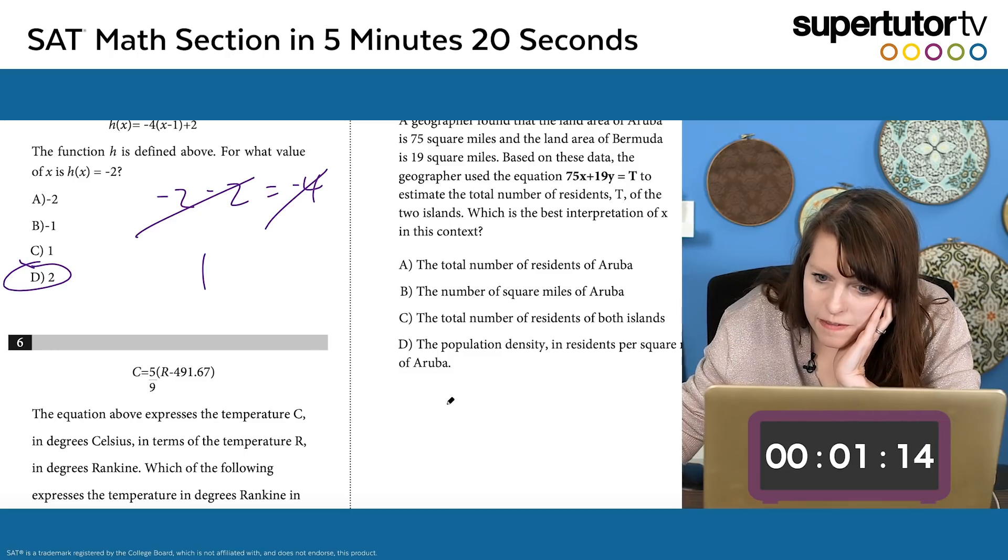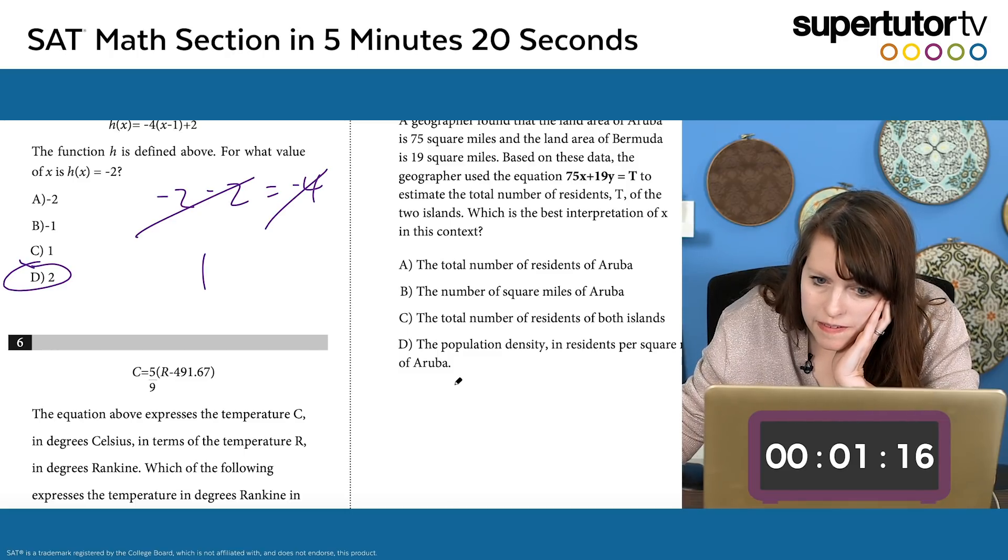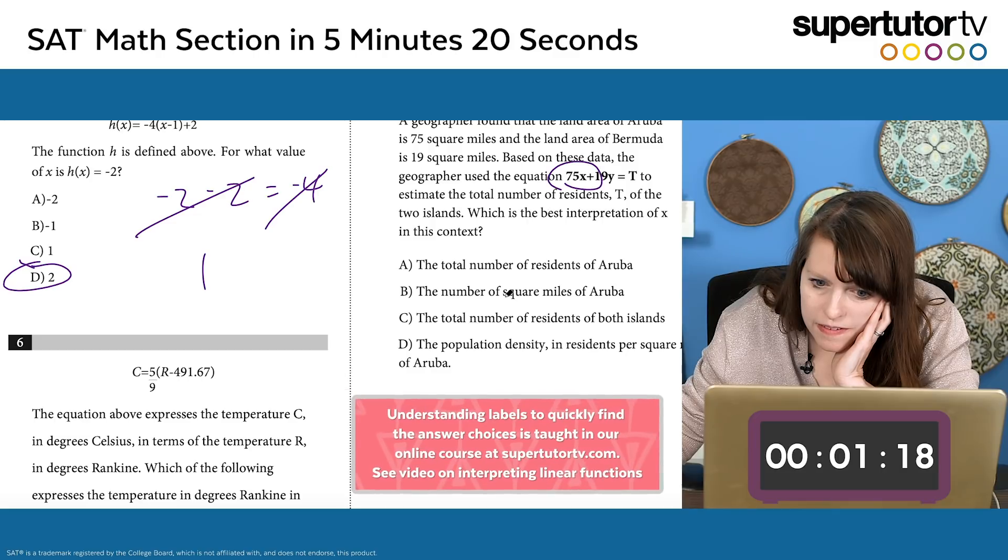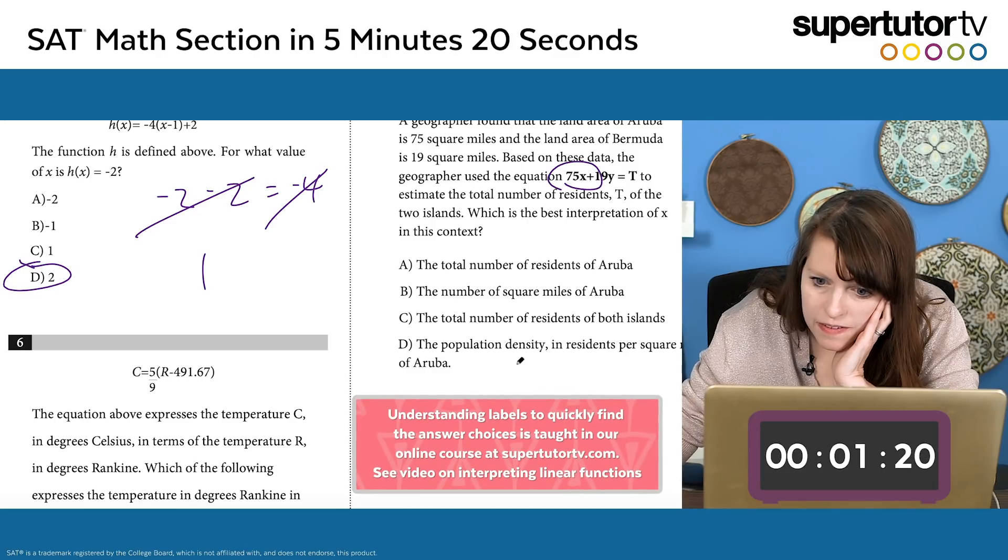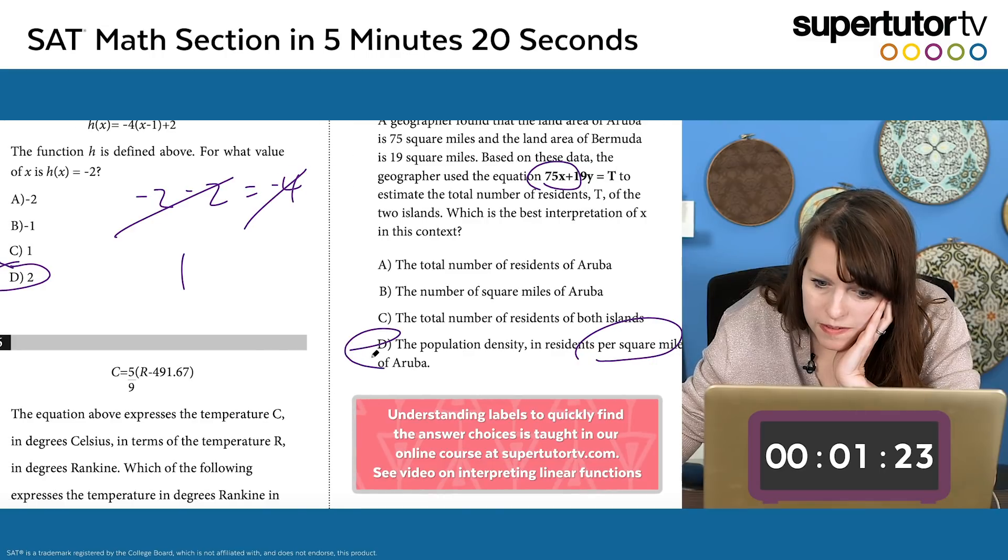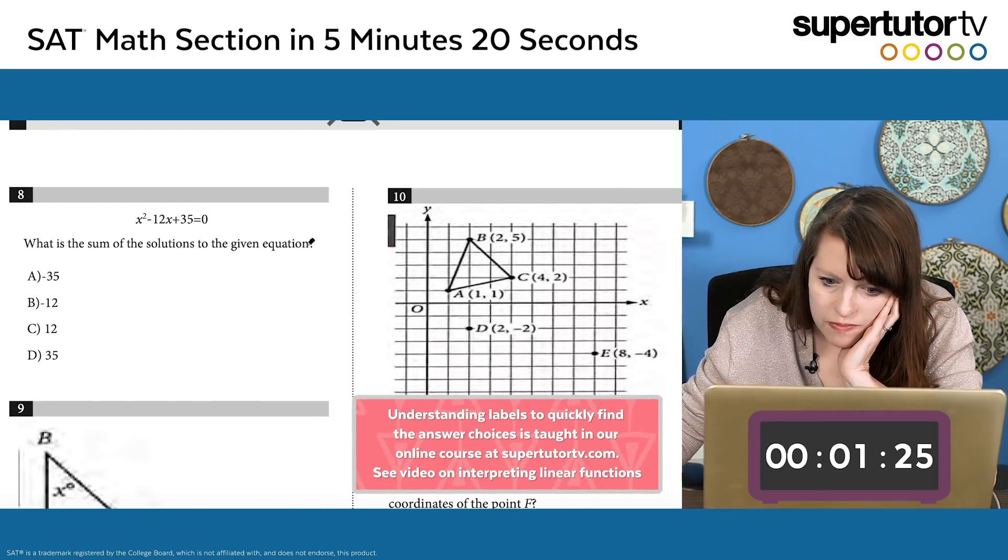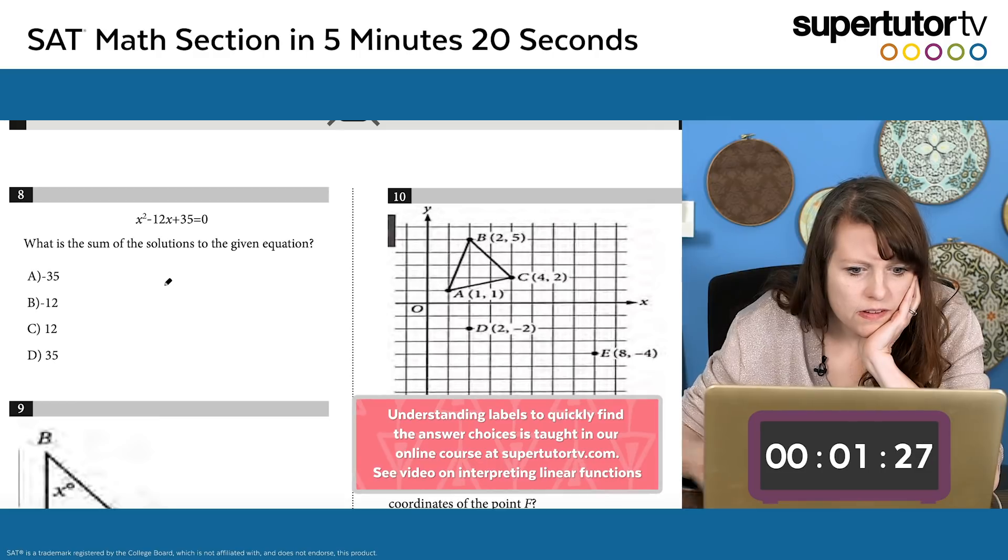The geographer found the land. So here I'm working with the idea that this is in square miles. I'm using my units here to hack this. And the T is in what is the T? And the T is in total number of residents. So I need per square mile somewhere because that has to cancel, and that's just a trick that I know when you have rates.